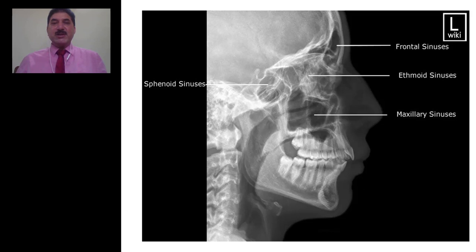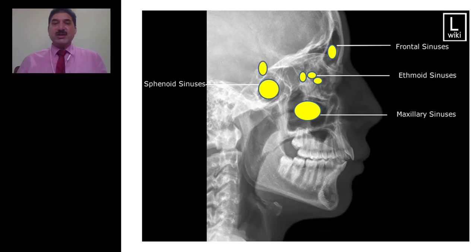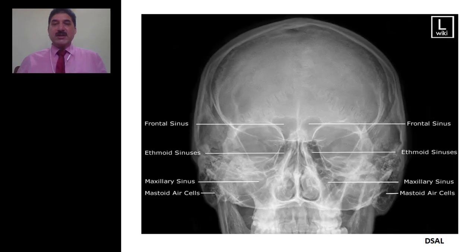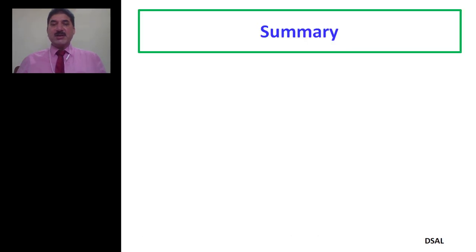Now let us see how these paranasal sinuses look on imaging. On a lateral X-ray of skull, we can see the frontal sinus between the inner and outer table of the skull, the maxillary sinus within the body of the maxilla, the ethmoidal air cells divided into anterior, middle, and posterior groups, and the sphenoidal air cells within the body of the sphenoid. Above the body of the sphenoid is the sella turcica, or pituitary fossa, which lodges the pituitary gland. On an anteroposterior view of the skull, we can again see the frontal air sinus within the frontal bone, the maxillary air sinus within the body of the maxilla, and the ethmoidal air cells.